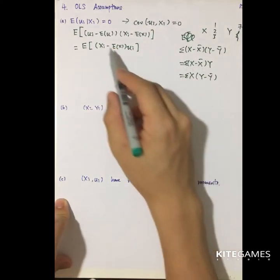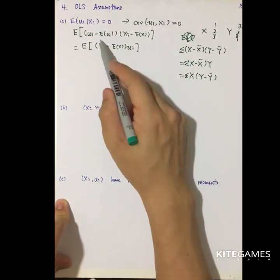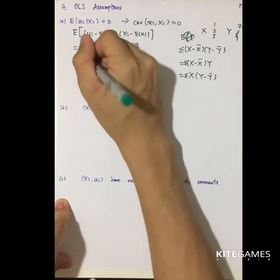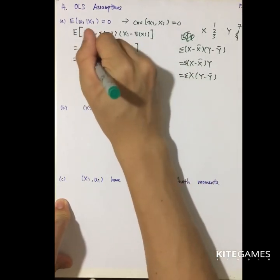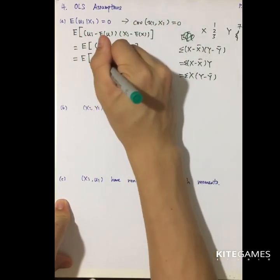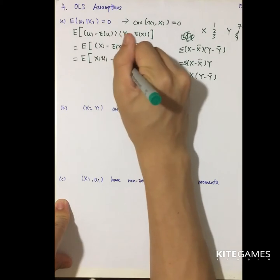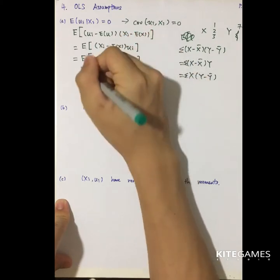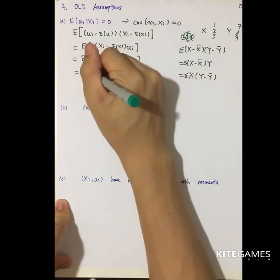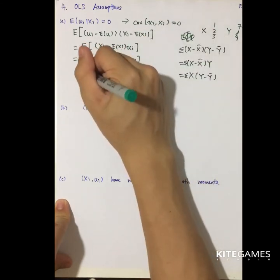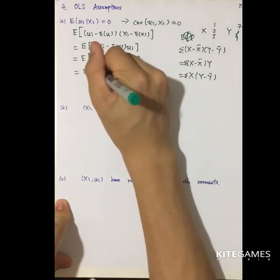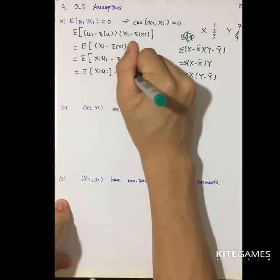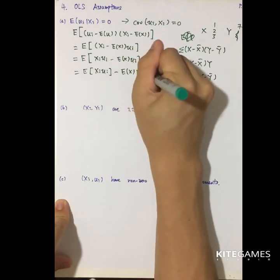Here, I can just take away the E[u] term. What is remaining is that I group x_i and u_i minus E[x] times u_i. That is equal to E[x_i·u_i] minus E[x]·E[u_i].